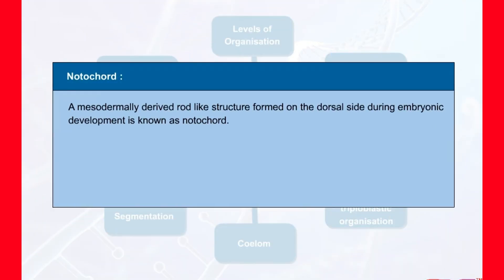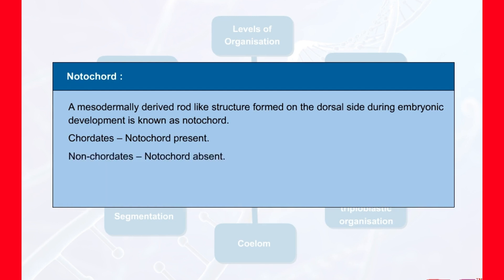Notochord: it is a mesodermally derived rod-like structure formed on the dorsal side during embryonic development in some animals. The animals which have a notochord are known as chordates, and those animals which do not have one are known as non-chordates.